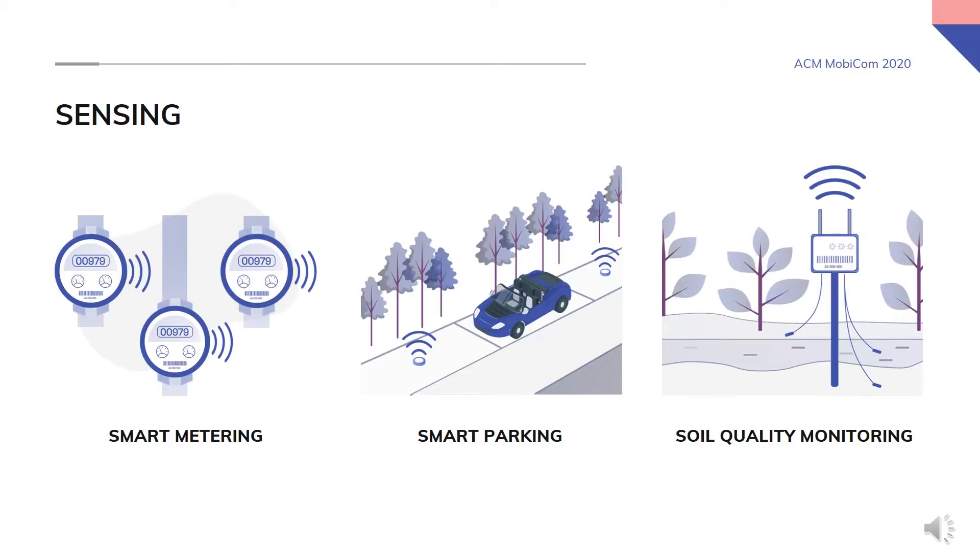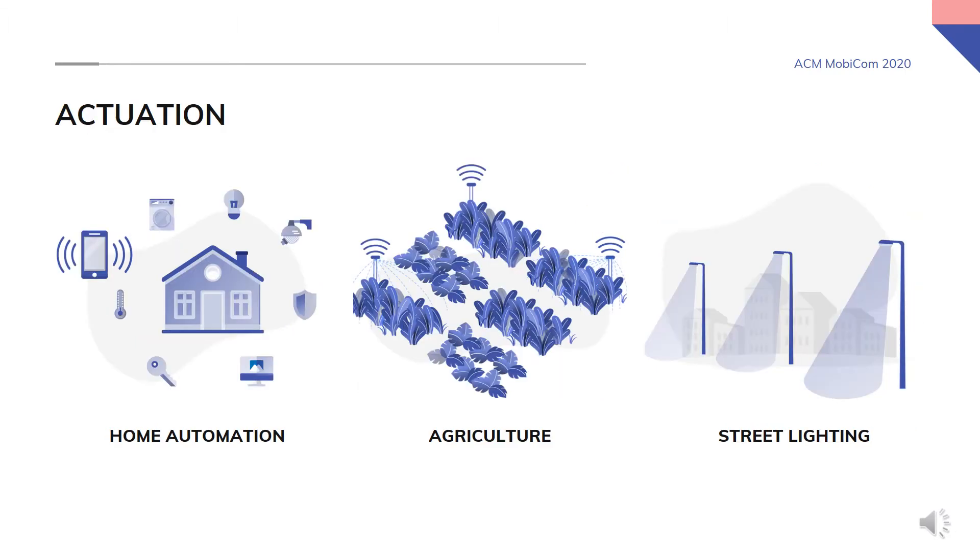Low-power wide area networks such as LoRa are everywhere. They have a wide spectrum of users ranging from sensing such as smart metering, parking and soil quality monitoring to actuation such as home automation, agriculture and street lighting. These applications require deploying large numbers of nodes under dense environments.